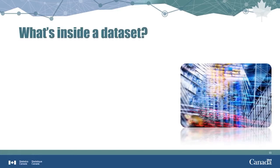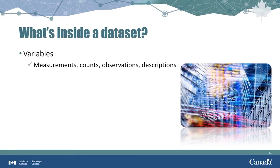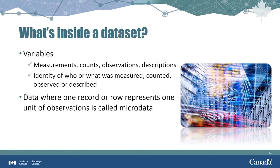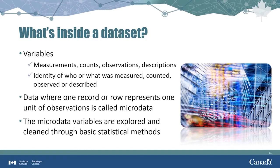The actual data inside a dataset or database are arranged in variables. Some variables represent the measurements, counts, observations, or descriptions that we talked about earlier. Other variables serve to identify to whom or what those measurements, counts, observations, or descriptions pertain. Data where one record or row represents one unit of observation is called microdata. It's highly recommended to explore and clean microdata before doing any sort of analysis. Basic statistical methods are applied to microdata variables — see the videos on central tendency and dispersion for more information.